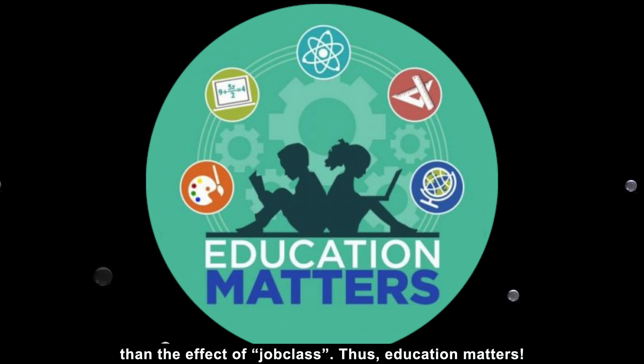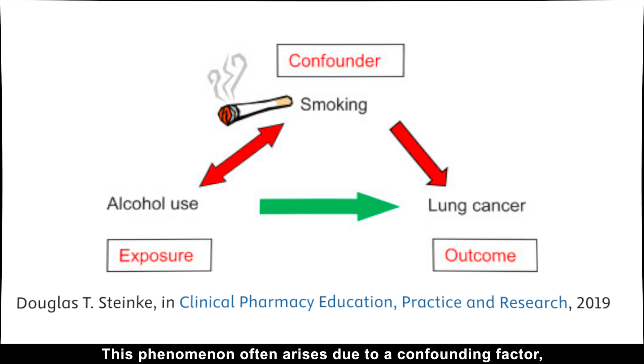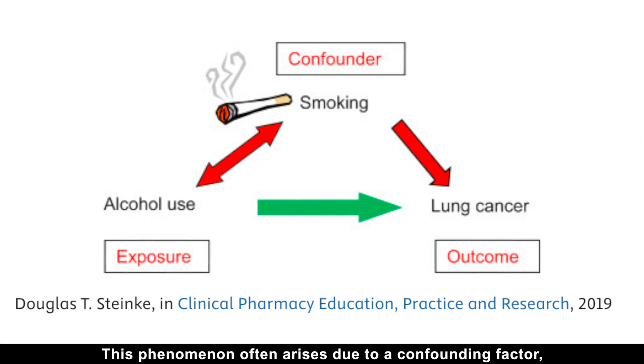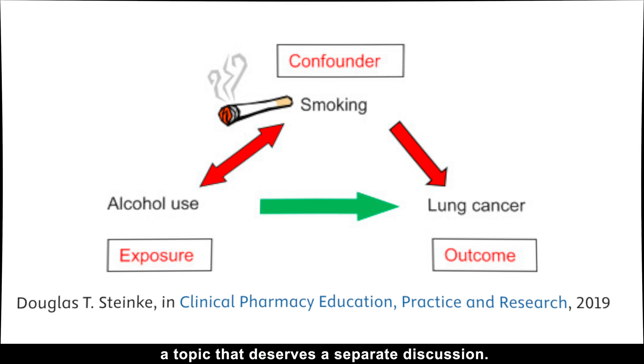The effect-size package and the eta-squared function demonstrate that the effect of education is four times stronger than the effect of job class. Thus, education matters. This phenomenon often arises due to a confounding factor, a topic that deserves a separate discussion.